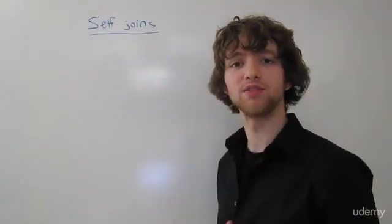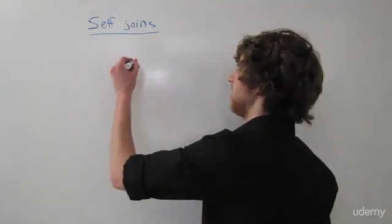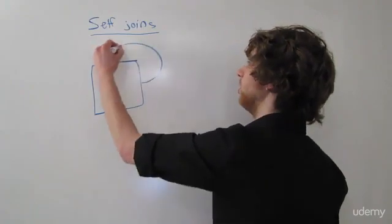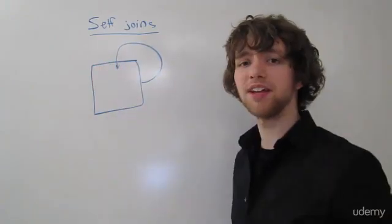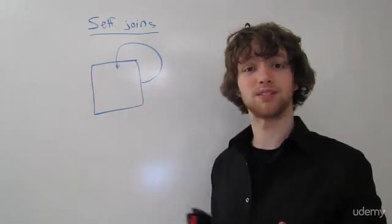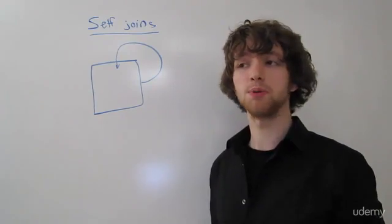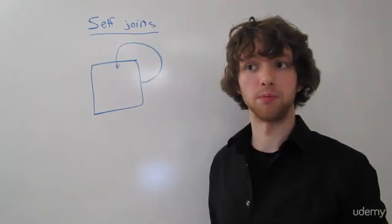The way a self-join works is you take a table and you are essentially joining it with itself. And that's what kind of makes self-joins confusing and a lot of people can't find practical purposes for them.